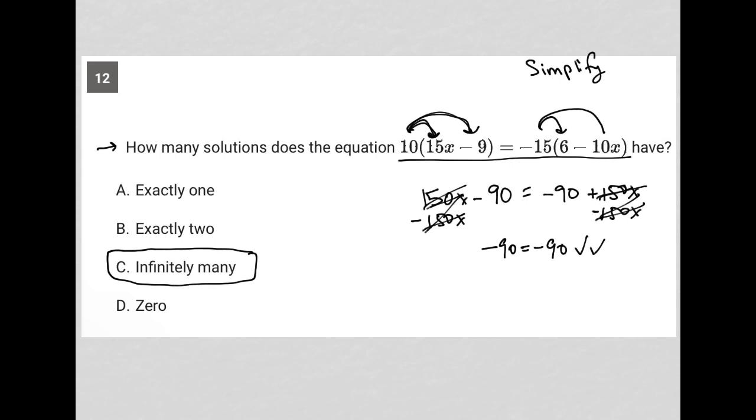Another way to think about it is what I had here is 150x minus 90 equals, I'll just rearrange the right-hand side to say also 150x minus 90. And I can just ask myself, when is this true? It's always true.